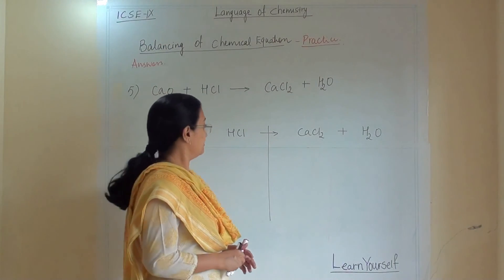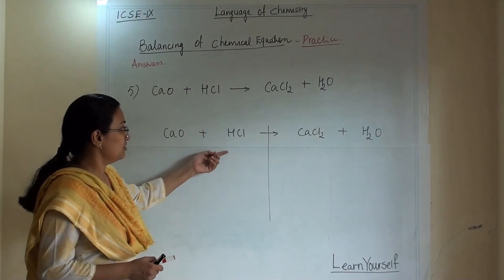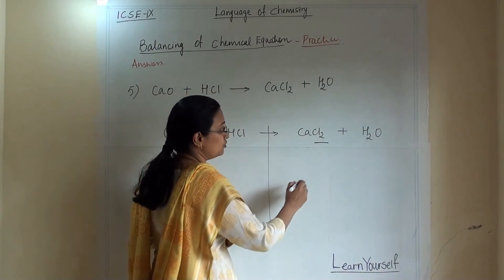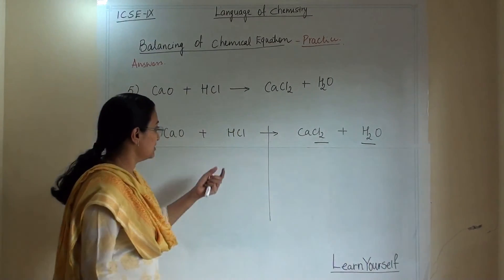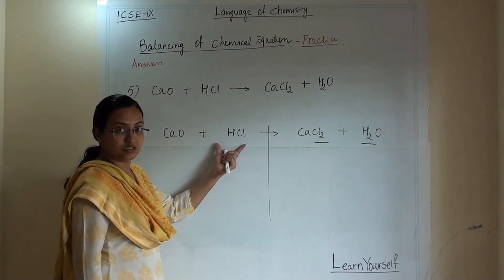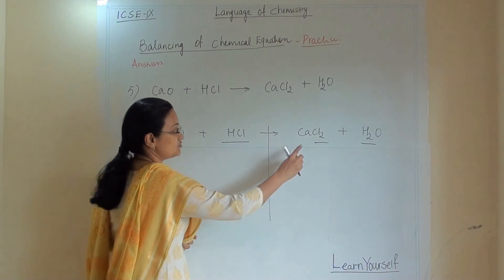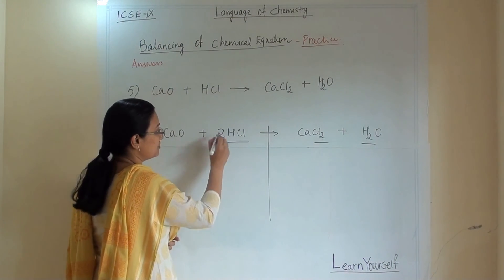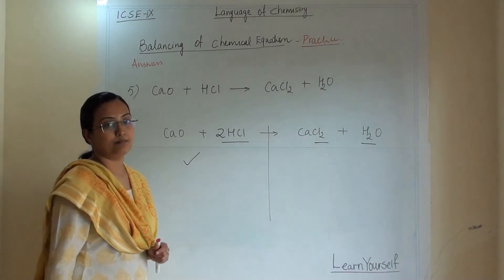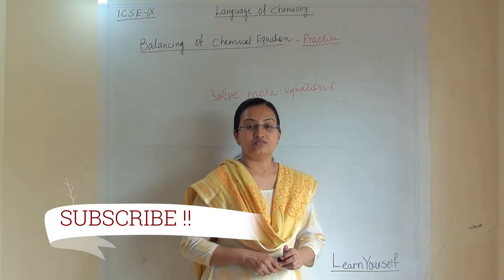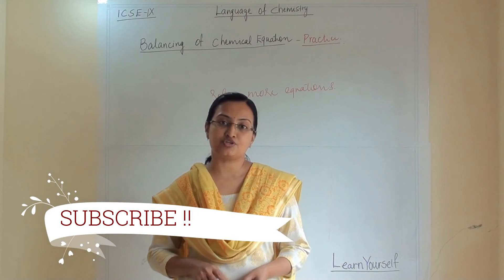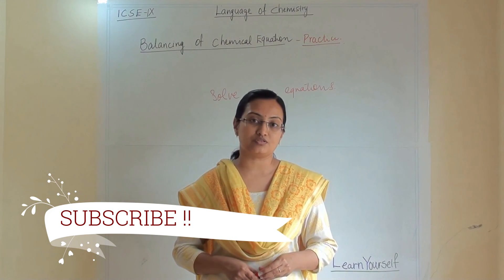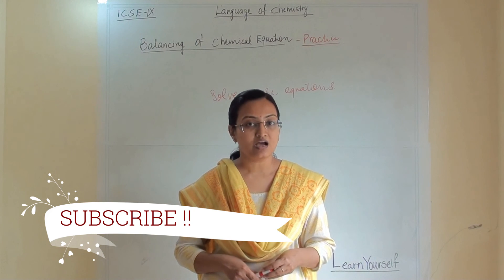In the fifth reaction, you can see that towards the product side there are 2 chlorine and 2 hydrogen, whereas towards the reactant side both atoms appear together, so simply add 2 and the equation is balanced. Some more equations are given in the description for further practice. By the trial and error method you can solve those equations, and answers are also provided.